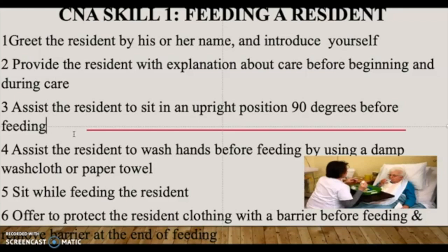The fourth component: assist the resident to wash their hands before feeding by using a damp washcloth or paper towel. If they are able to wash their hands on their own, great. If not, you assist them by giving them a damp washcloth or paper towel. Make sure you wash their hands before you start feeding them.